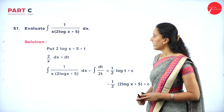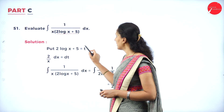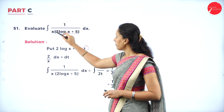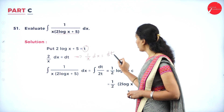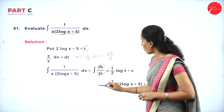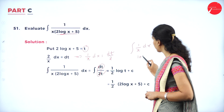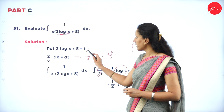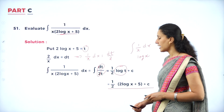Evaluate ∫1/[x(2 log x + 5)] dx. This is integration by substitution. Let t = 2 log x + 5. Differentiating, dt = (2/x) dx, so (1/x) dx = dt/2. Substitute: the integral becomes ∫(1/t) · (dt/2) = (1/2) ∫(1/t) dt = (1/2) log|t| + C. Replacing t back, the answer is (1/2) log|2 log x + 5| + C.